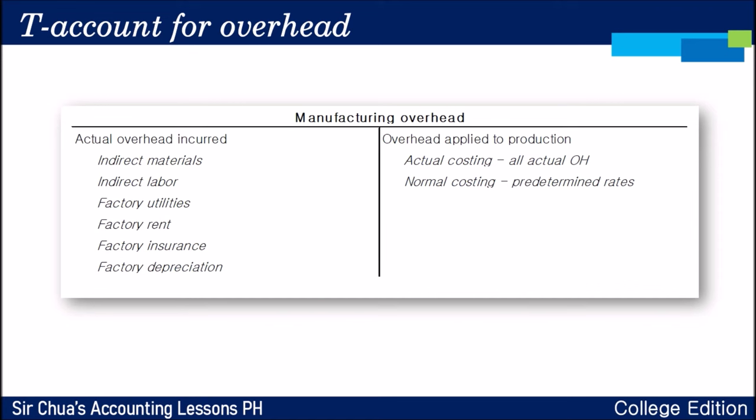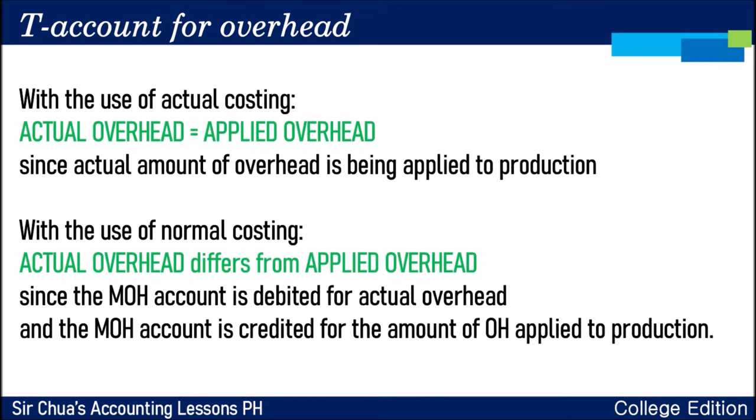Remember that in the T-account for overhead, the debit side has all actual overhead, and the credit side depends on the costing method. In actual costing, the actual overhead is what's applied to production. In normal costing, we use predetermined rates. With actual costing, actual overhead equals applied overhead, so there are no variances. But with normal costing, the manufacturing overhead account is debited for actual overhead and credited for the amount applied to production — that's why we get a variance.